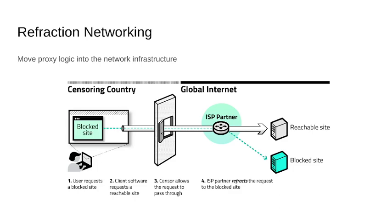This kind of infrastructural deployment helps prevent blocking by making it difficult to identify the protocols to begin with, and also difficult to block a large address space that could be participating in the system. To get connected, a user uses our client software to request a blocked site, and the client tunnels that request within a connection to a reachable site — one that a censor would not look twice at — and the censor's firewall allows this request to pass through. On the path between the client and that reachable site, one of our participating ISP locations refracts the request out of the tunnel and passes it to the blocked site, giving the user access to the content they were trying to access.